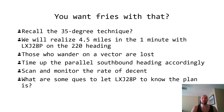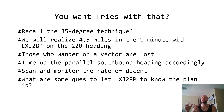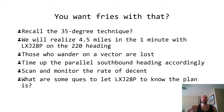Time up the parallel southbound heading accordingly. We know 184 is the heading Lima 462 is on, so we want to get the lateral separation, then start pointing FlexJet back to the general Lampkin area while still maintaining lateral separation with WestJet 2513 as they make their descent. Scan and monitor the rate of descent. And what are some cues to let FlexJet 2A Papa know the plan? We want them to understand this isn't pilot's discretion — we need them to get down and below. Let's see how we can get that accomplished.